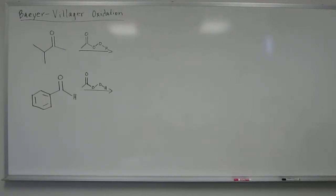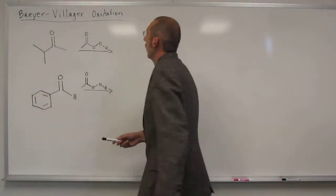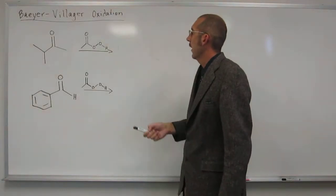Okay, let's do this problem, this Baeyer-Villiger oxidation problem, or these two problems. So in it, you're taking a ketone or an aldehyde, and you're reacting them with a peroxy acid.